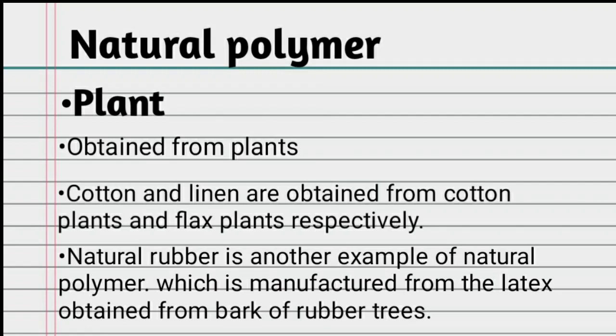Cotton and linen are obtained from the cotton plant and flax plant respectively. Natural rubber is another example of natural polymer, which is manufactured from the latex obtained from the bark of a rubber tree. Examples of plant-based natural polymers are cotton, linen, and natural rubber.